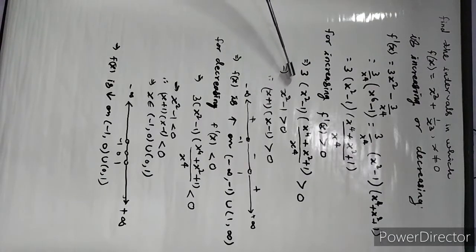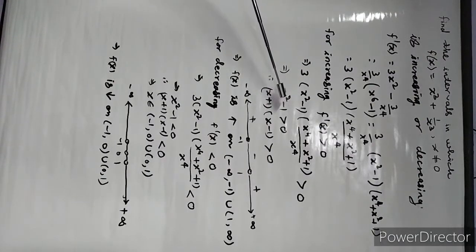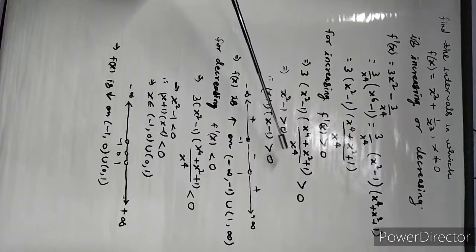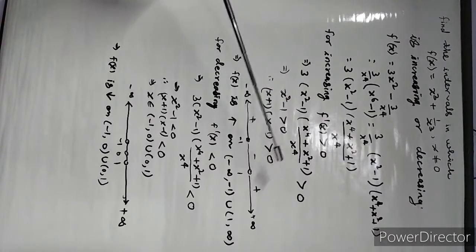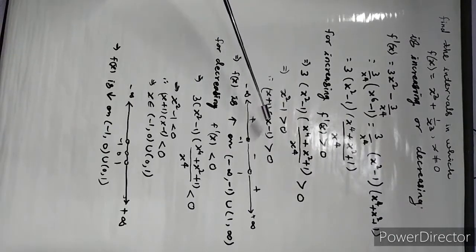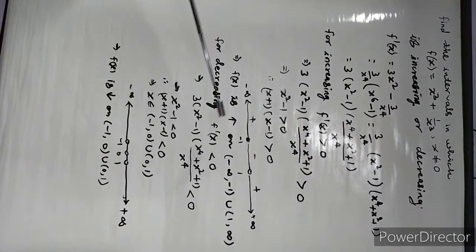For increasing, put f'(x) greater than 0. So 3(x² - 1)(x⁴ + x² + 1) / x⁴ > 0. Since (x⁴ + x² + 1) is always positive and x⁴ > 0, this implies that x² - 1 > 0.